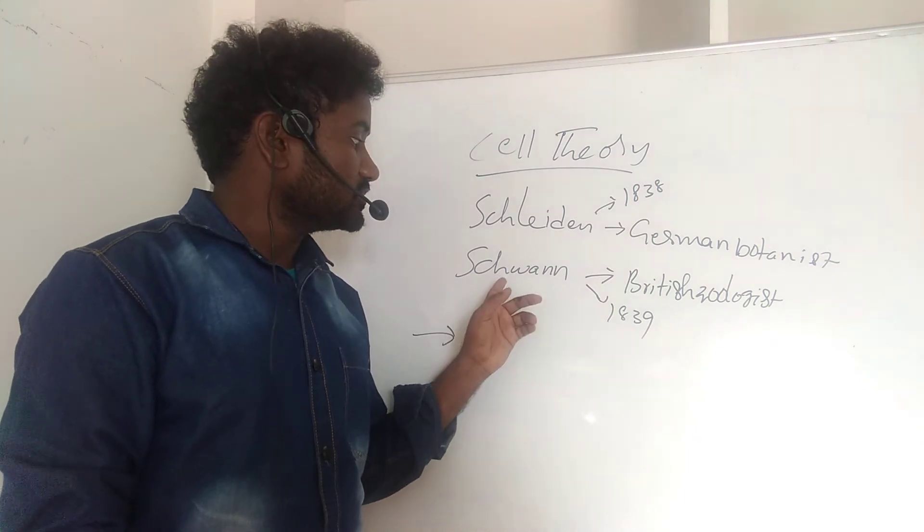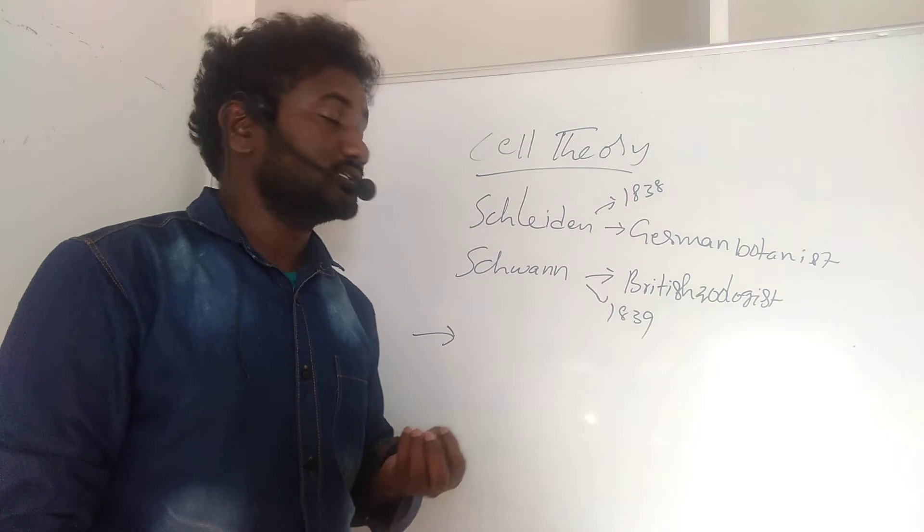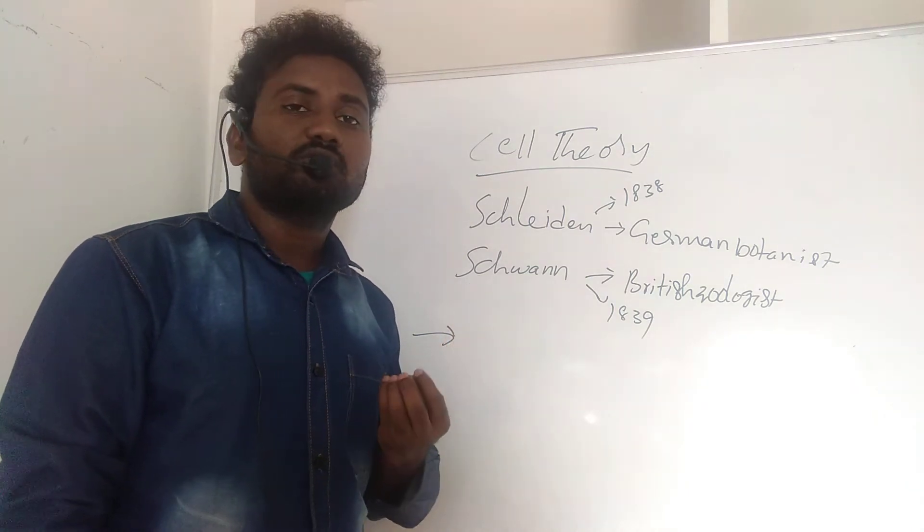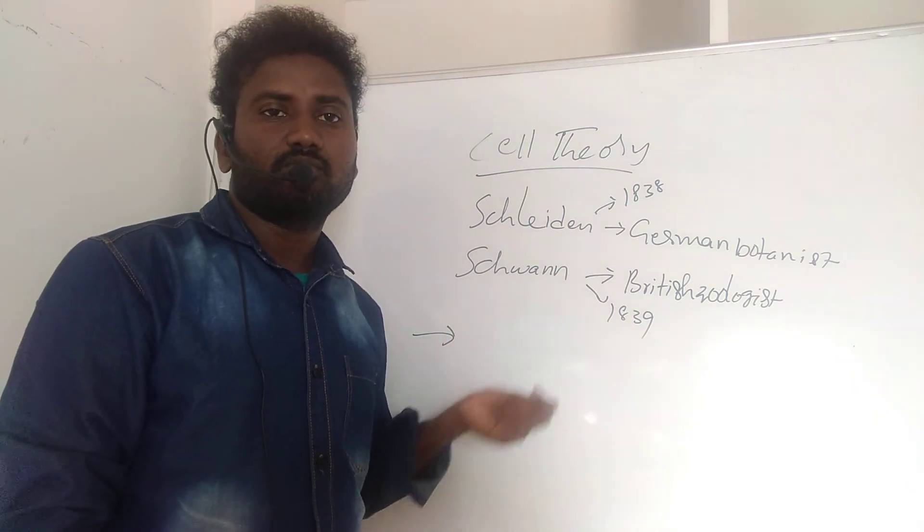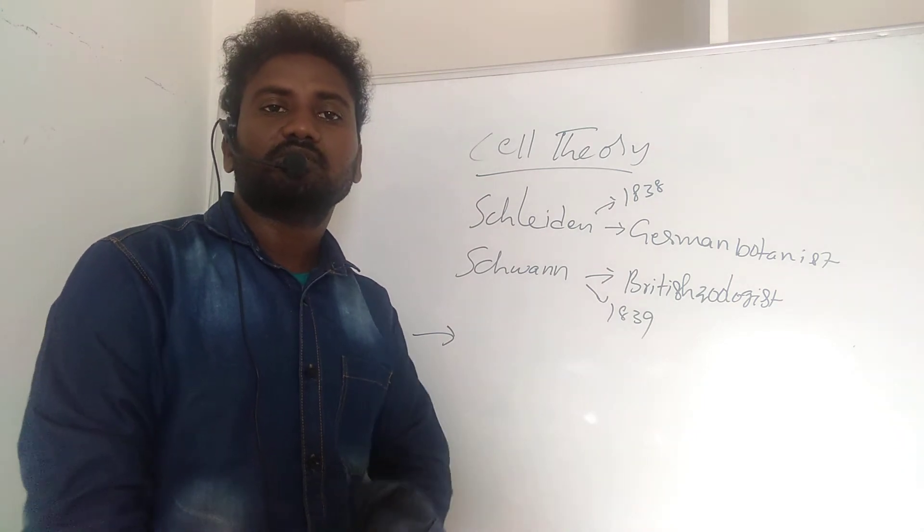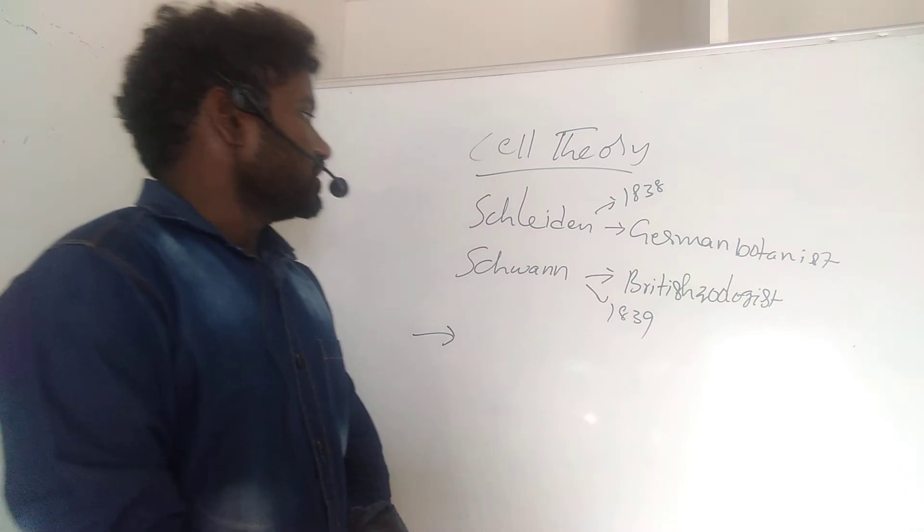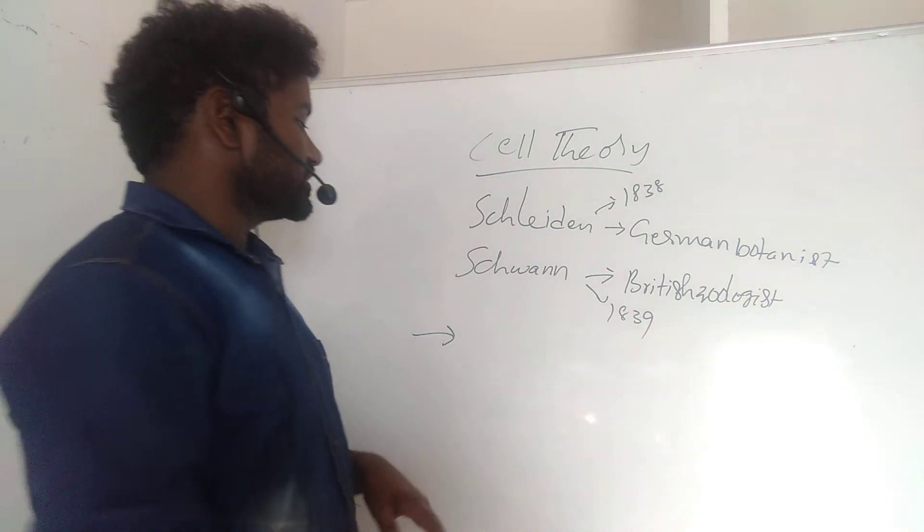Schwann also studied plant cells and concluded that the presence of cell wall is a unique characteristic of plant cells, but is absent in animals. Animal cells are only bounded by a thin layer called plasma membrane.